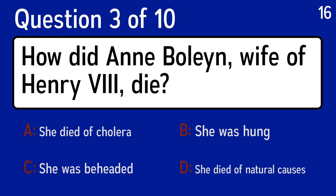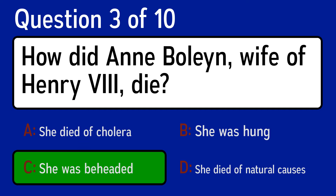Question 3: how did Anne Boleyn, wife of Henry VIII, die? The correct answer is C, she was beheaded.